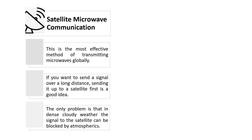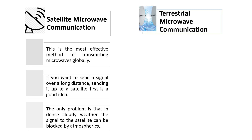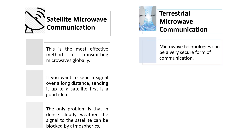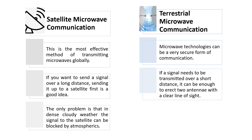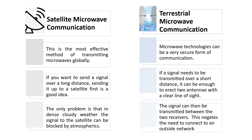The only problem with satellite microwave communication is that dense cloudy weather can obstruct the signal to the satellite. The next type is terrestrial microwave communication, which can be a more secure form of communication. If a signal needs to be transmitted over a short distance, it can be enough to erect two antennas with a clear line of sight. The signal can then be transmitted between those two receivers alone, negating the need to connect to an outside network, making the communication more secure.